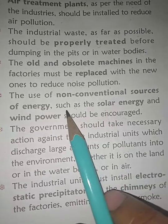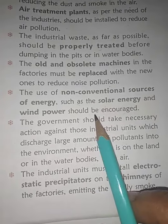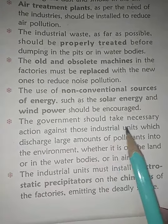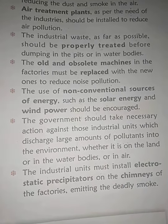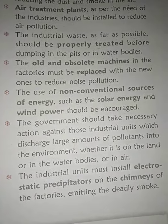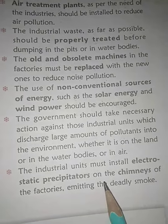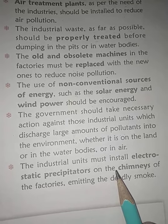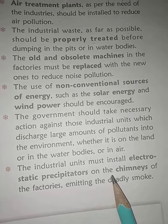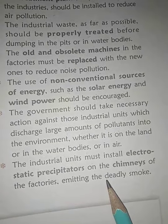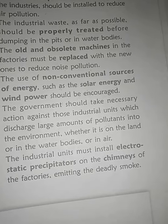Non-conventional power resources such as solar energy and wind power energy should be used. The government should take necessary actions so that industries do not release large amounts of pollutants freely. Electrostatic precipitators should be installed on chimneys so that smoke from factories is filtered before going out.